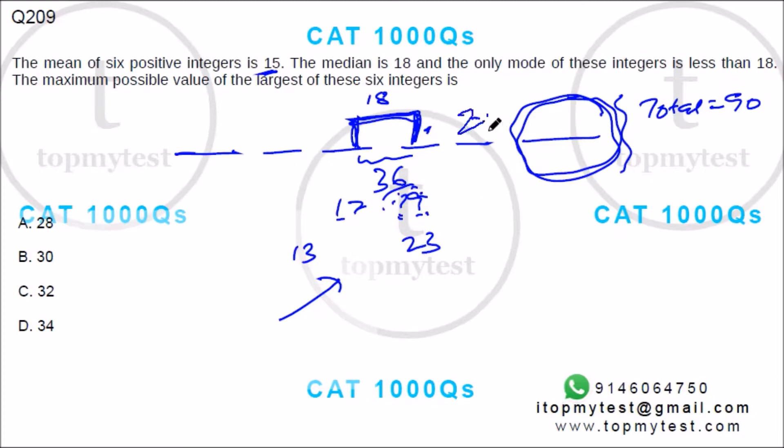So the answer will be the last number. What is it? 36 plus 2, 38 plus 20, 58. From 90, you subtract 58 and get 32. Option C is your correct answer.